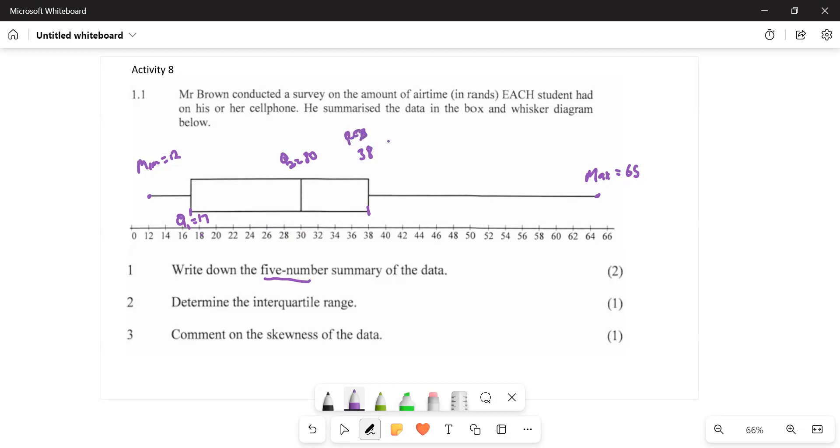So now we know how to go from the graphical representation to our five-number summary. What else should we know? They say we should be able to determine the interquartile range.